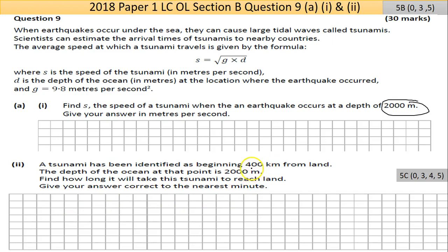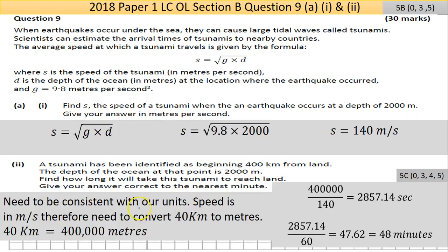They really need to be the same for any calculation. To convert from kilometers to meters, you multiply by a thousand. So multiply 400 by a thousand, you should have 400,000 as in the answer. You find out basically how many 140s, that's the speed, are there in 400,000.